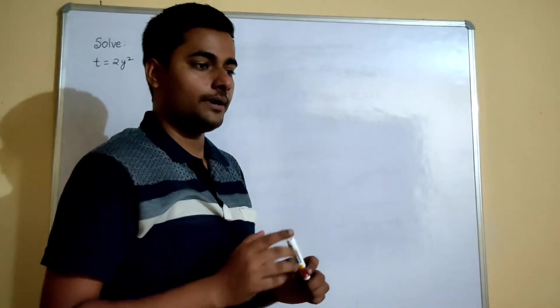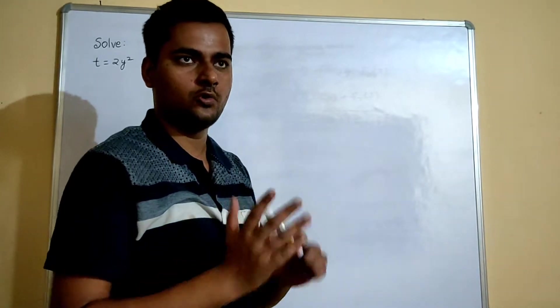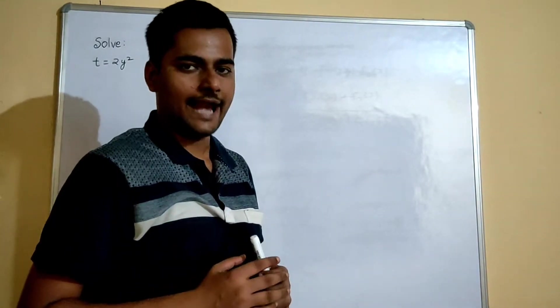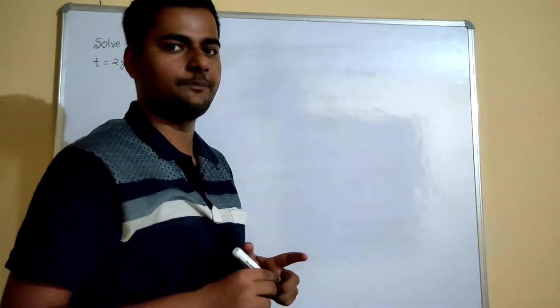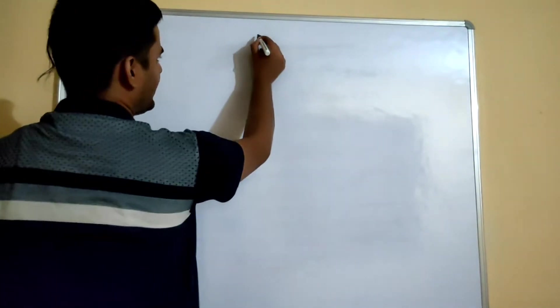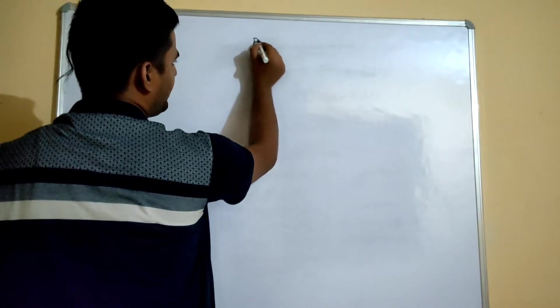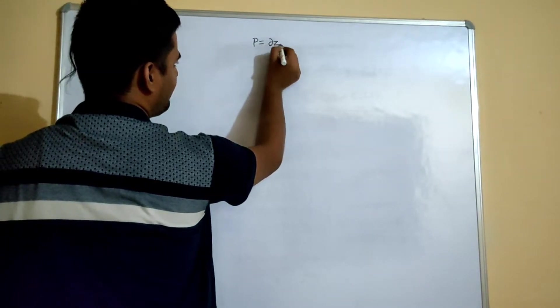But how to solve T equals to 2y square? For that you need to know what are some notations in the world of PD. So those notations are: Your P is your del z by del x.